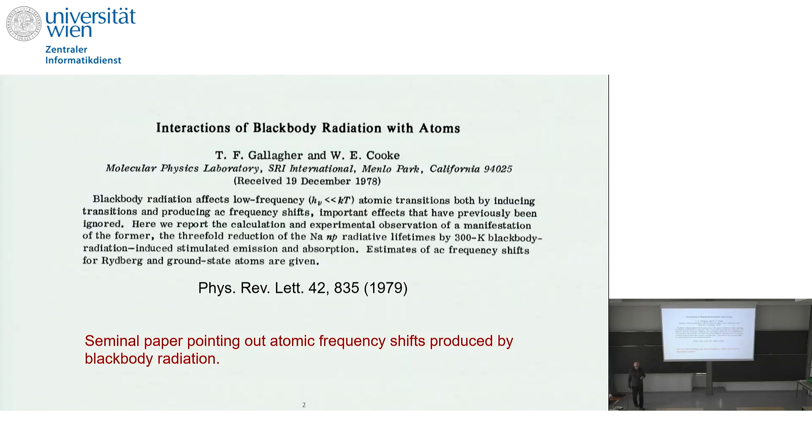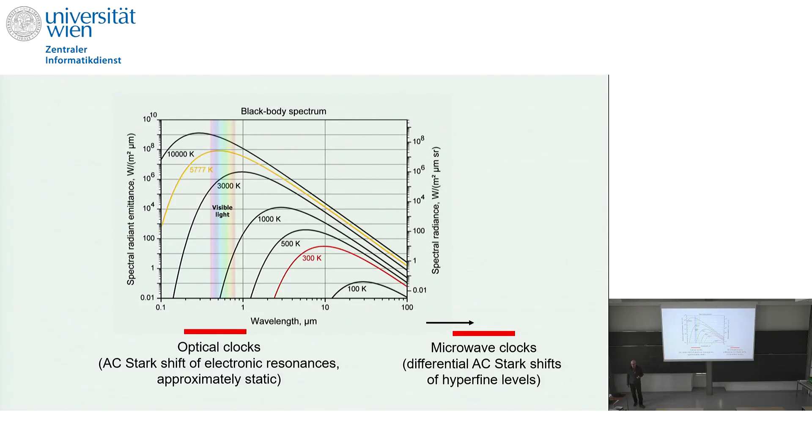So the history of the interaction of blackbody radiation with atoms I think started by this investigation by Gallagher and Cooke at Stanford in 1978, who pointed out here that atomic transitions will be influenced by blackbody radiation both in terms of transitions induced and also in terms of frequency shifts. From this point of view quite a seminal paper. They studied Rydberg atoms, so a little bit different domain than atomic clocks, but it is what got people interested in the field.